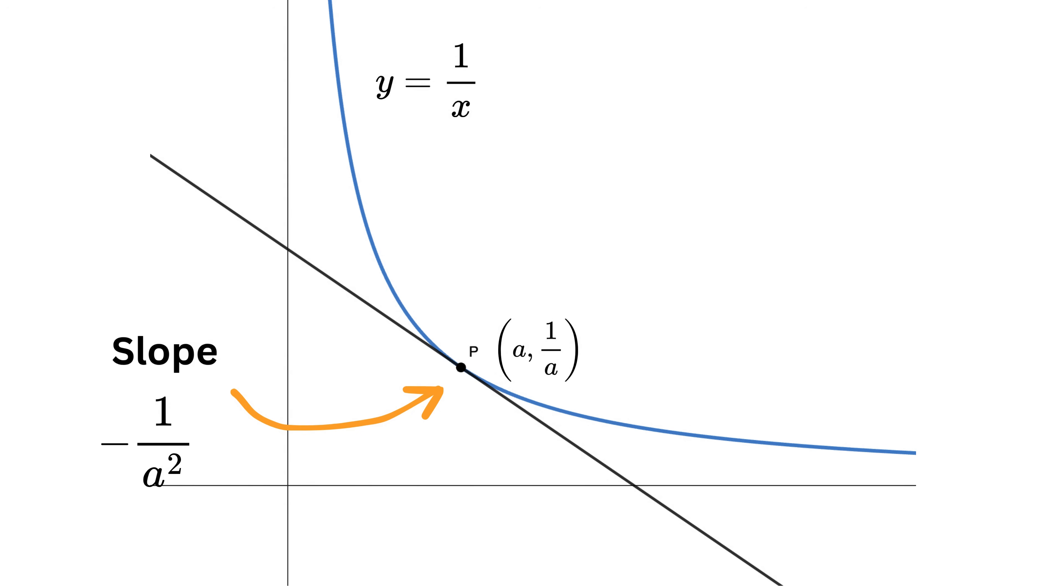Now, once we know the slope and a point through which the line passes, we can write the equation of that line, which means our tangent line. Remember the basic formula for a line? It's y minus y1 equals m multiplied by x minus x1, where m is the slope and x1, y1 is the point on the line.